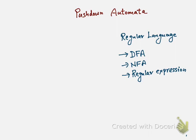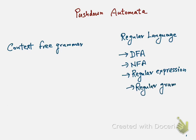We looked at regular expressions to recognize a regular language. After that we studied the concept of grammar — type 0, type 1, type 2, and type 3 grammars. We studied context-free grammar and regular grammar. Regular grammar is the fourth way to recognize regular languages. A regular grammar has all production rules of a specific form, whereas context-free grammar has a non-terminal or variable on the left-hand side.